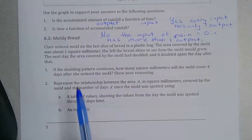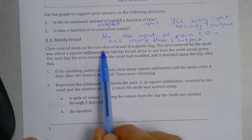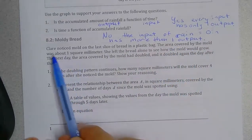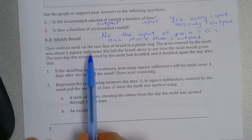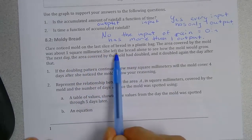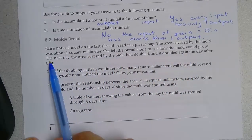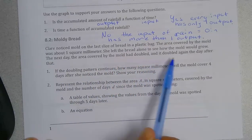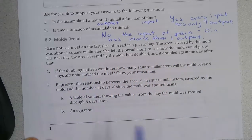So now we're going to talk about moldy bread. Claire noticed mold on the last slice of bread in a plastic bag. The area covered by the mold was about one square millimeter. She left the bread alone to see how much mold would grow. The next day the area of the mold had doubled and it doubled again the day after.